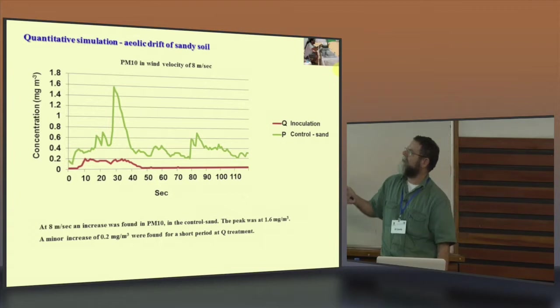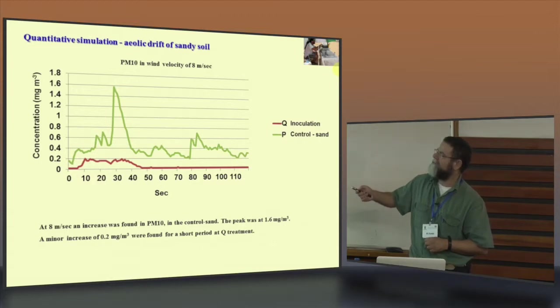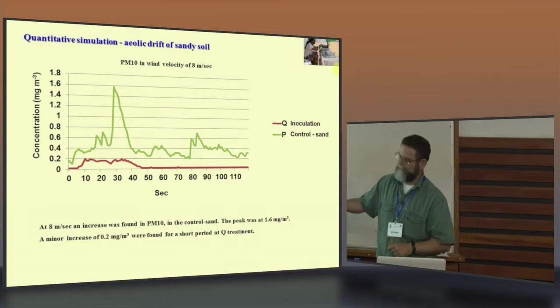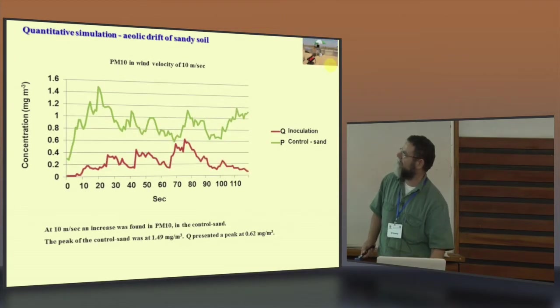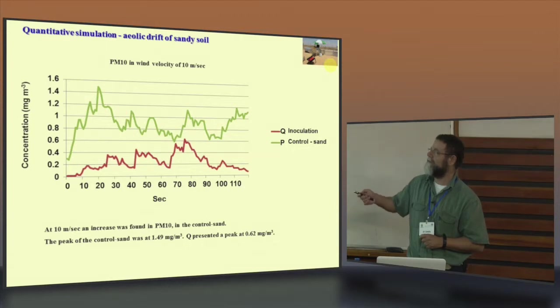Increasing the speed to eight meter per second. Now we see clearly what's happened with the sand control. It's reaching to 1.6 and compared to about 0.2 in the inoculant. And this is going a long term. This is a very short period in compare, only about 45 seconds. Increasing to 10 meter per second. Now we receive very good results from the inoculation. We can see that inoculated is moving, although the control is much higher.